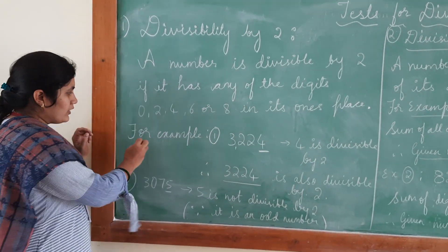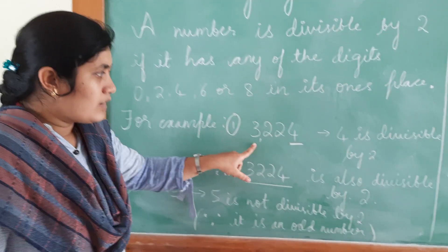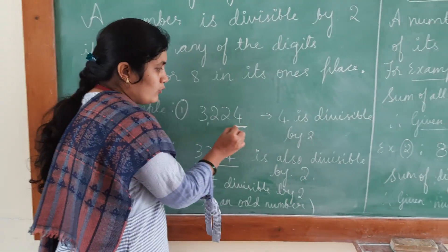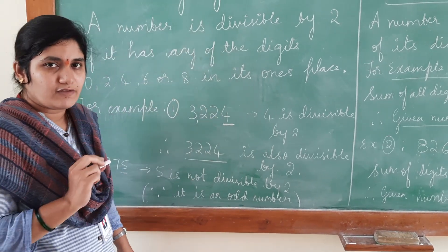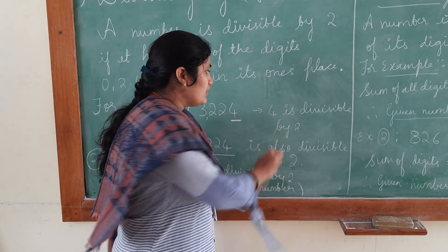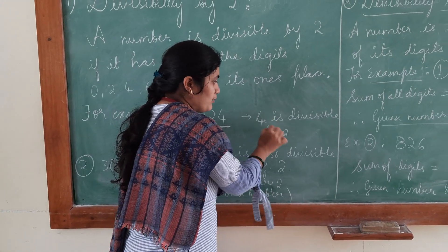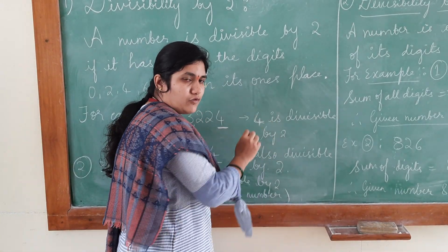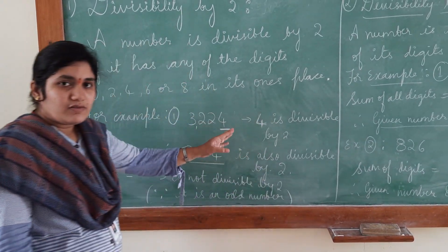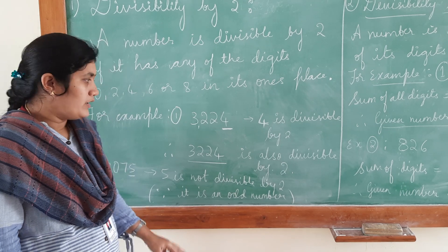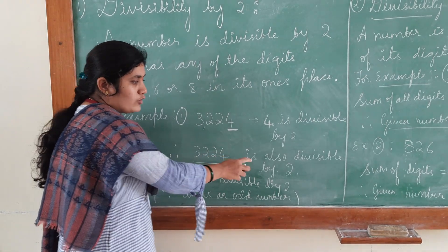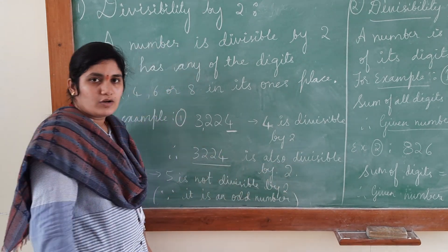Now let us move to the example: number 3,224. As you can see here, ones place is 4, which is an even number. 4 is divisible by 2 — that means 4 is a multiple of 2 and 2 is a factor of 4. So therefore, by observing this, we can say that the given number 3,024 is also divisible by 2.